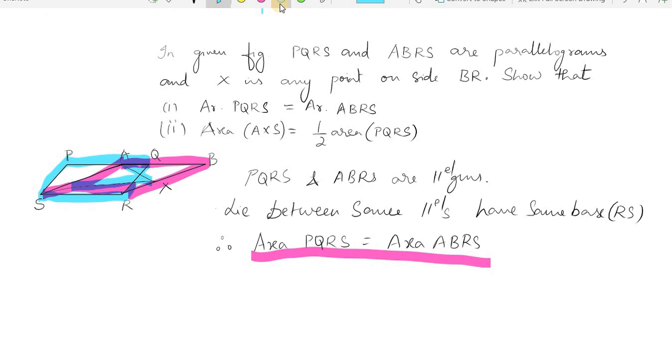If you see ABRS and AXS, you will see that both of them have the same base - AS is the base - and they lie between the same parallels, BR and AS. So I can say that the area of triangle AXS is half area of ABRS.